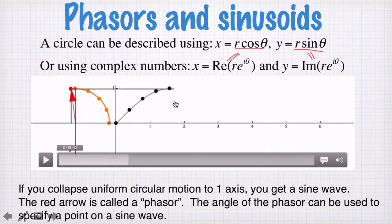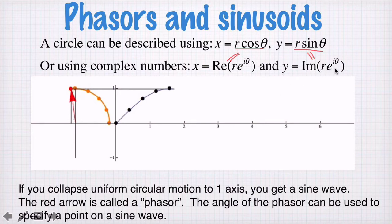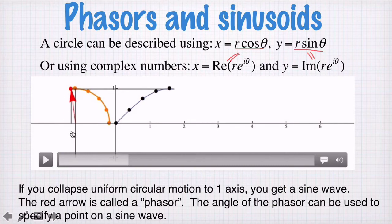And what I'm plotting over here in these black dots and the blue line is the height of this phasor. So that is the y component, or in other words, the imaginary component of r e to the i theta. So we can think about the vertical direction here as the imaginary part of e to the i theta, and the horizontal part as the real part of e to the i theta.